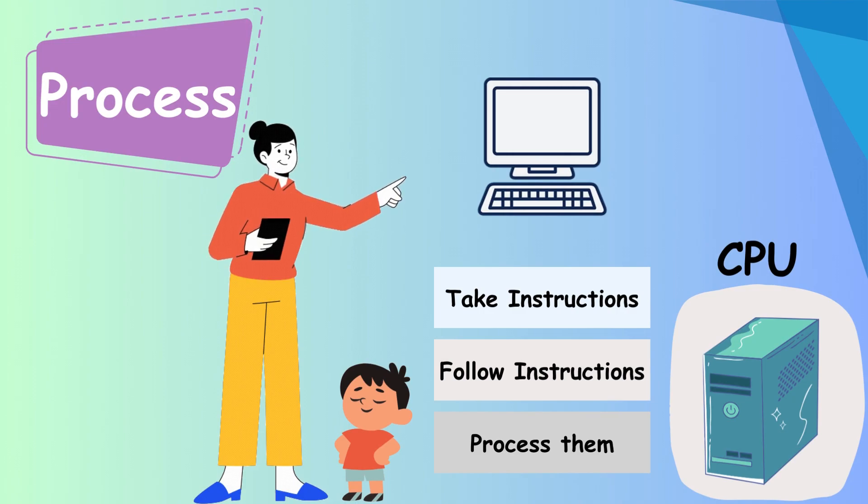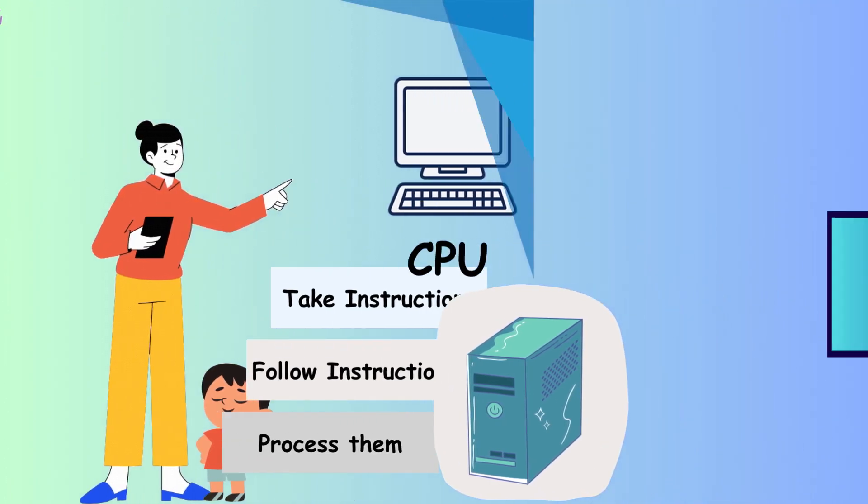Now, your computer has to figure out what you said, just like your robot friend needs to understand your commands. Inside the computer, there's a smart part called the brain, or CPU, Central Processing Unit. It takes your instructions and follows them step-by-step, doing all the thinking and calculations.